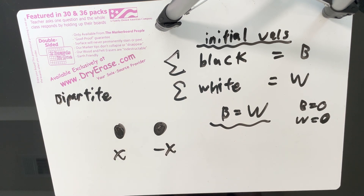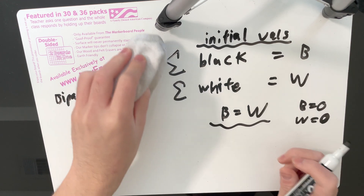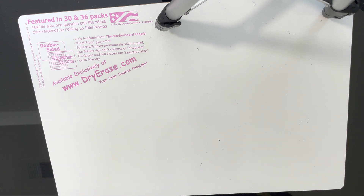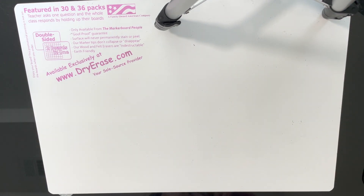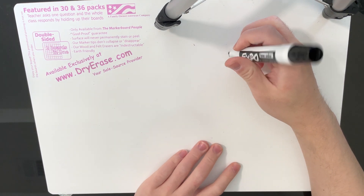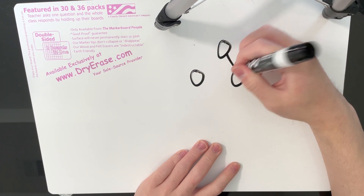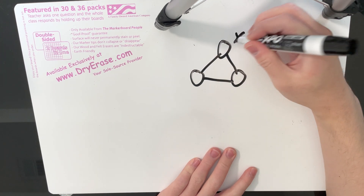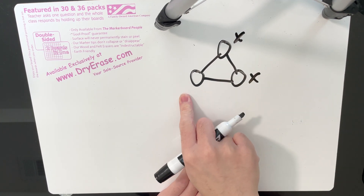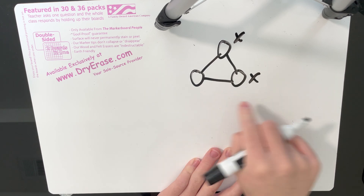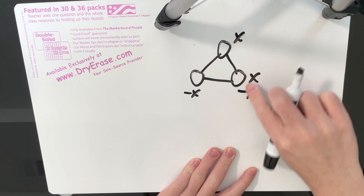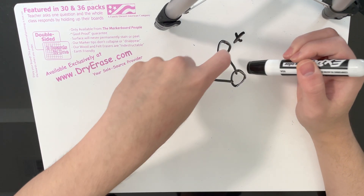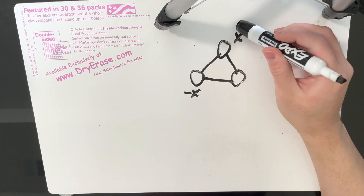Now let's consider the case where the graph is not bipartite. If a graph is not bipartite, it has an odd cycle. Let's assume our odd cycle looks something like a triangle. We can increase two nodes by x, then subtract x from the two on the other edge — so negative x and negative x — and one cancels out. What we've essentially done is made a move on two adjacent nodes where we add x to one and subtract x from the other.